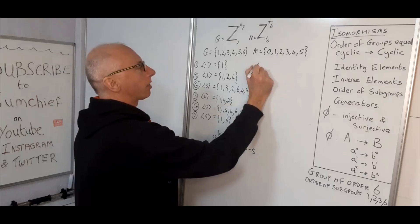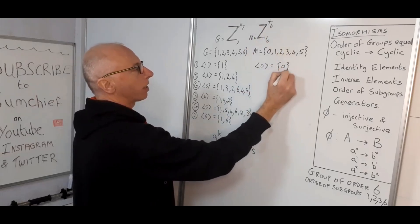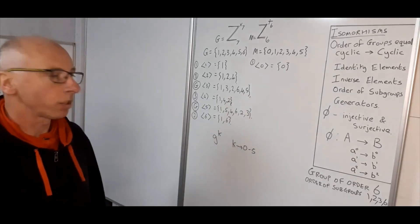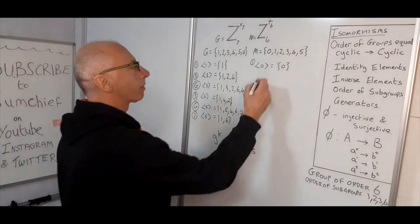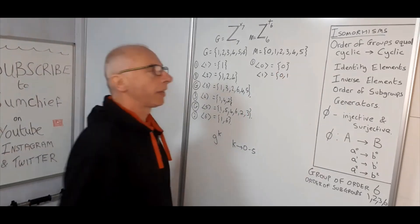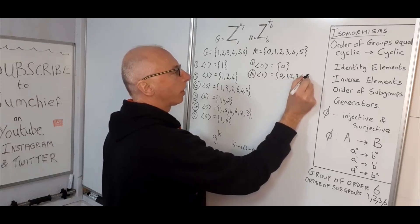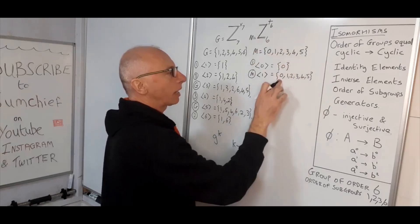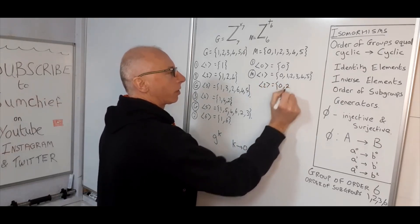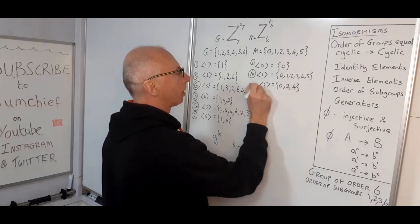Now let's look at group M under addition modulo six. Element zero: keep adding zero to zero, we only get zero — order one. Element one: starting from zero and one, keep adding one to generate zero, one, two, three, four, five — five plus one is six modulo six back to zero. So one generates the whole group M. Element two: starting with zero and two, adding two gives four, four plus two is six modulo six back to zero — that's order three.